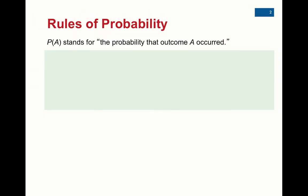The most important thing in this lecture is the rules of probability. When we say P of A — capital P of A — anytime we have a capital P, we're talking about the probability of, and then anything in the parenthesis stands for whatever event we're talking about. So it could be the probability that it rains, the probability that you flip a head, or the probability that you roll a two.